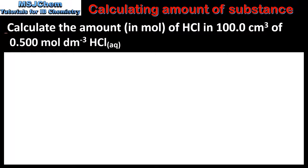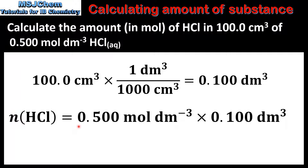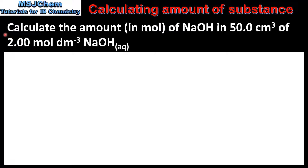In our first example we will calculate the amount in moles of hydrochloric acid in 100 centimeters cubed of a 0.5 mole per decimeter cubed solution. The first step is to convert the volume in centimeters cubed to decimeters cubed: 100 centimeters cubed equals 0.1 decimeters cubed. We then multiply the concentration by the volume, which gives us an amount of 0.05 moles.